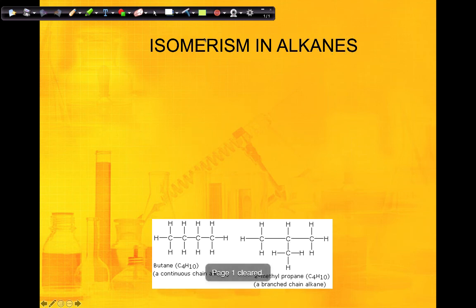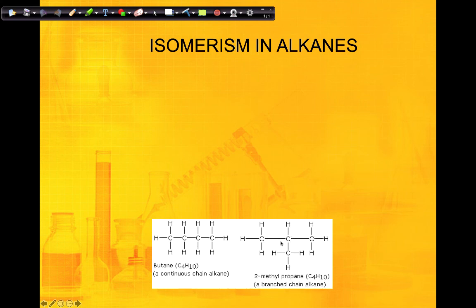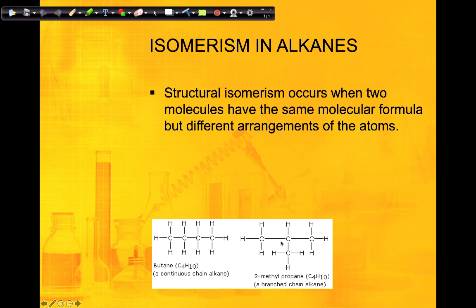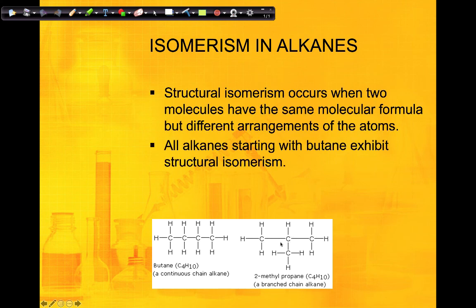Now we have something called isomers. Just because you have four carbons and ten hydrogens doesn't mean the compound is always the same, because you could take one carbon and put it in the middle as a branch — also called a substituent group. This creates a branched compound. Even though both compounds have the same molecular formula, they have different properties and are called structural isomers. Structural isomers have the same molecular formula but different arrangements of atoms, giving them completely different properties.